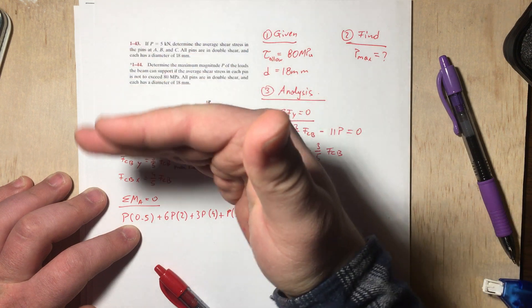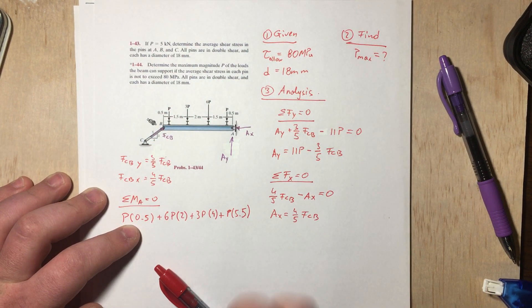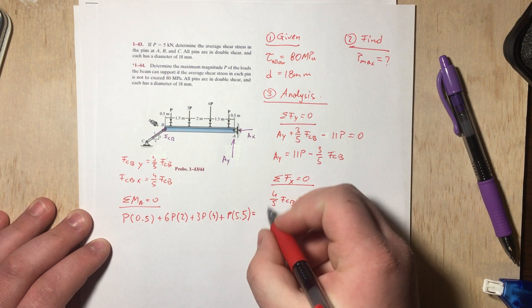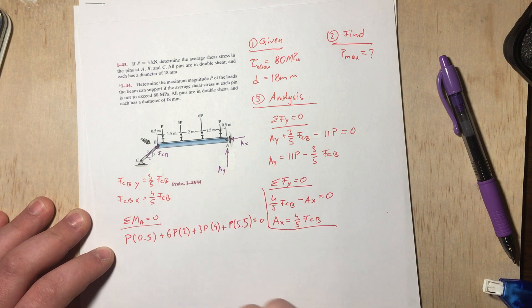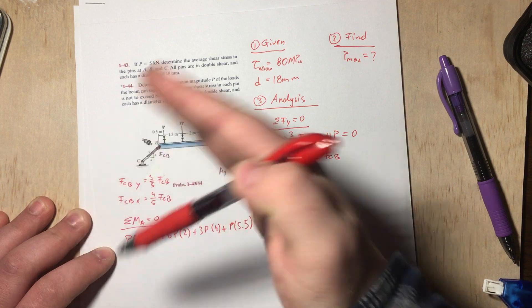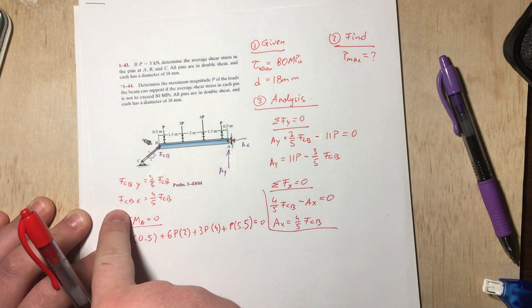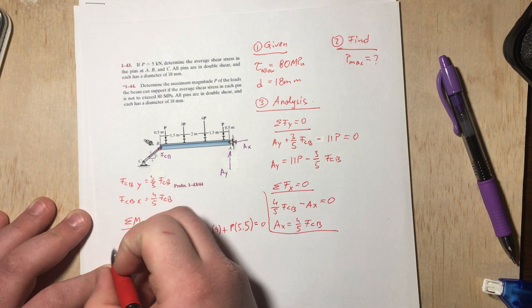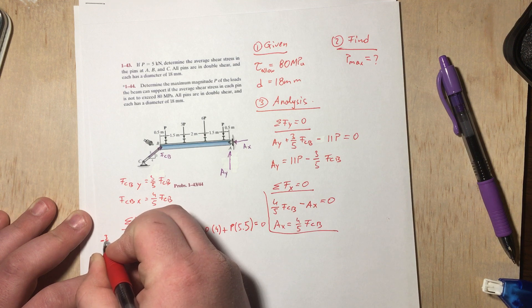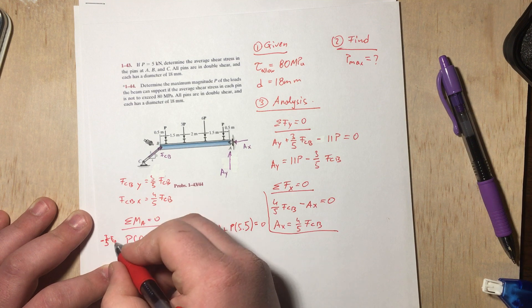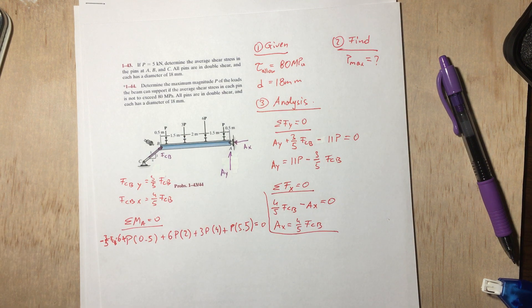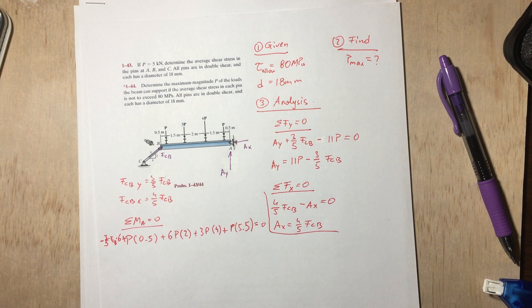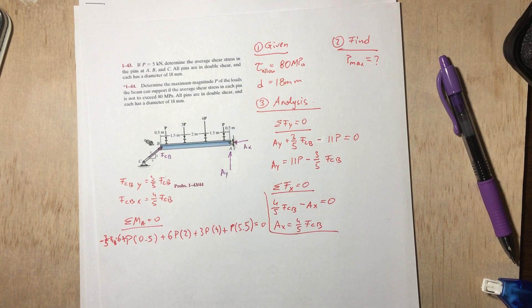Since they're going downward, the beam is going to rotate counterclockwise, so using the right-hand rule we're going to get a positive moment. That's why they're all positive. Let's look at our negative moments. Fcb in the y direction, that's going to move the beam clockwise. That means we're going to have a negative moment. So our Fcb in the y direction is 3/5 Fcb, so minus 3/5 Fcb, and the distance is going to be 6 times 6. Those are all the forces that are going to give us a moment.